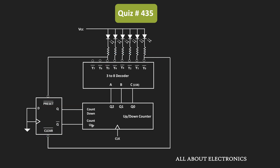So initially, the count of the counter is equal to 000. That means initially this Y0 output will become low and therefore it will generate the clear signal for the flip-flop. That means initially this flip-flop will get reset to 0, and therefore this Q output of the flip-flop will become 0. At the same time, this Q-bar output will become 1, which means initially this counter will start counting in the upward direction.